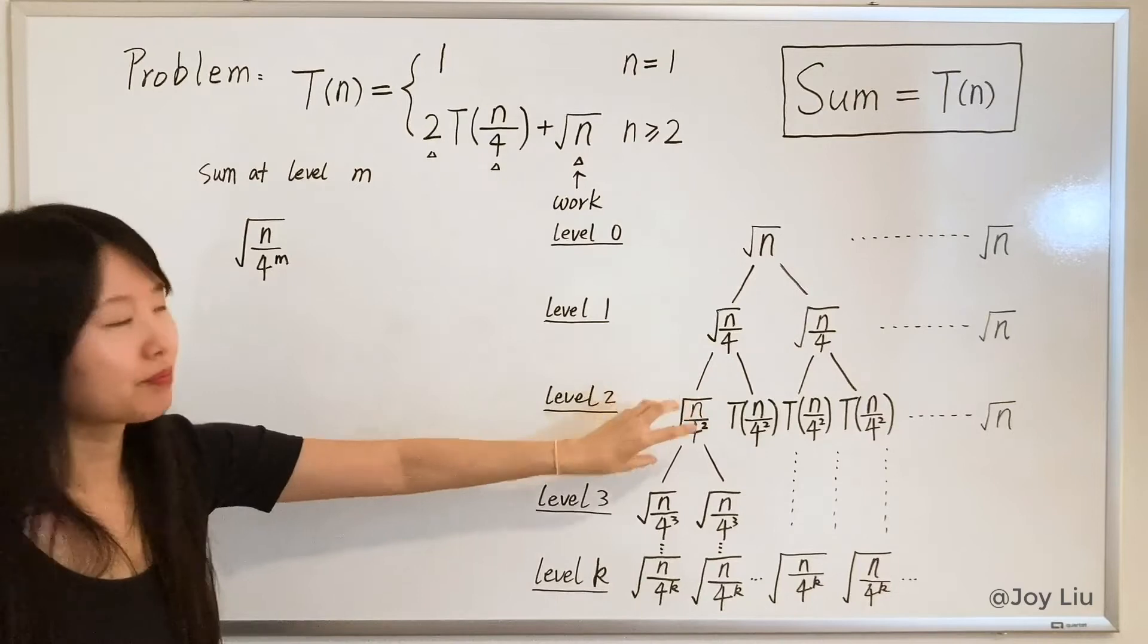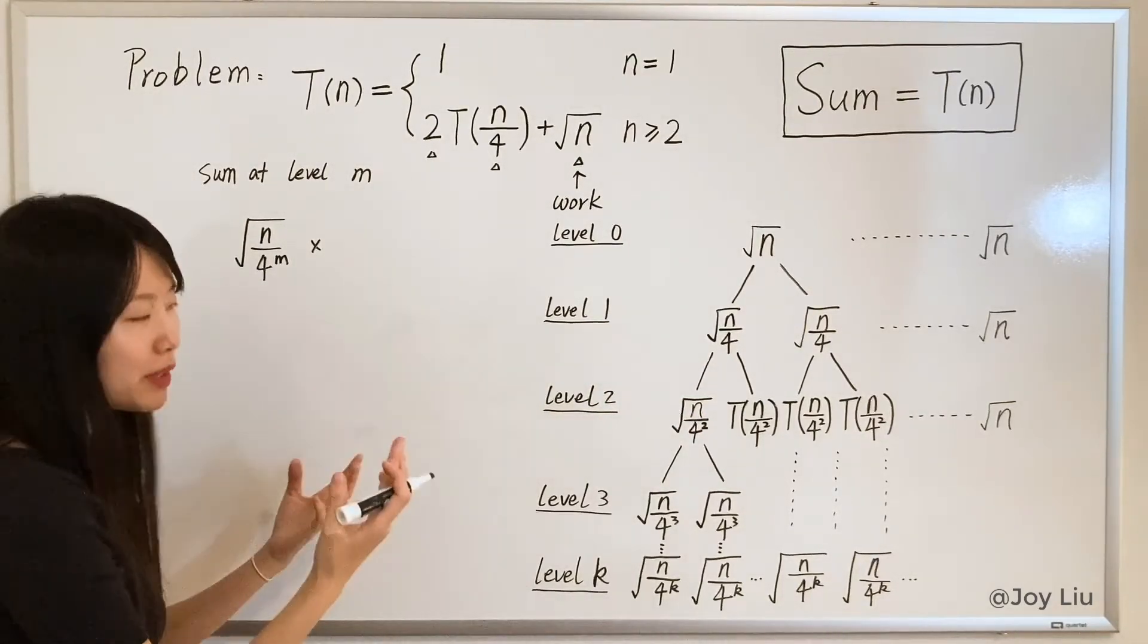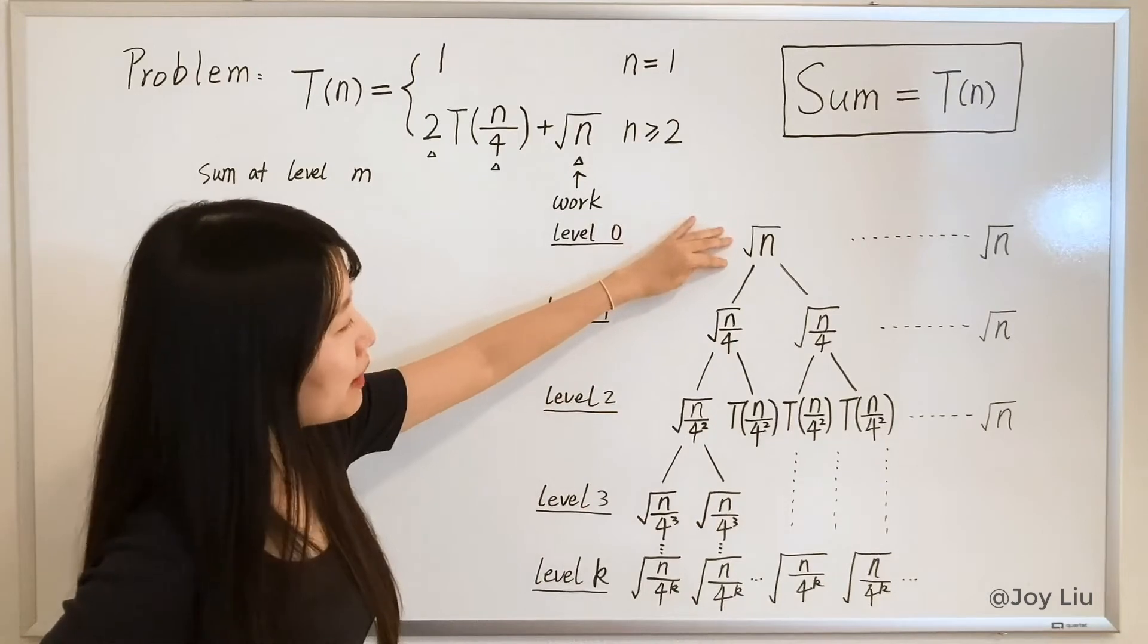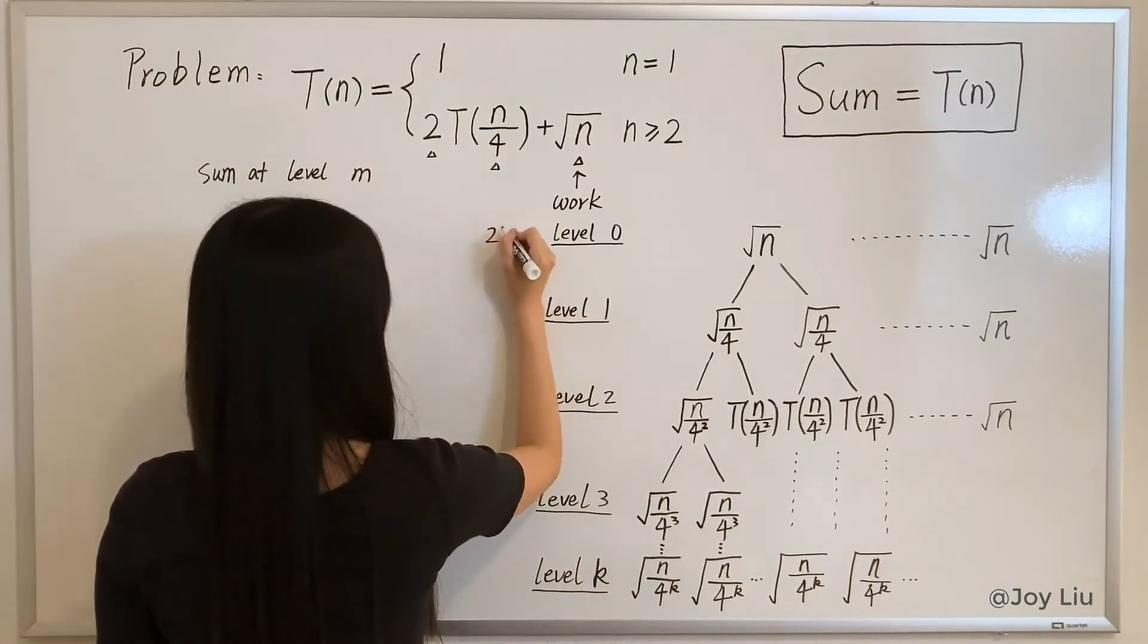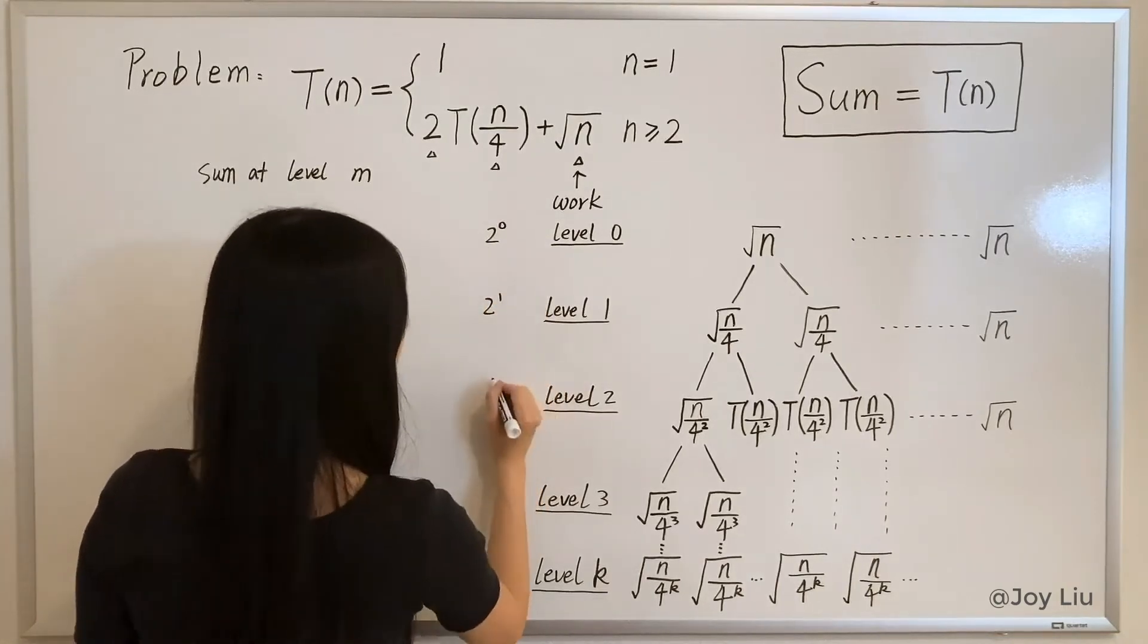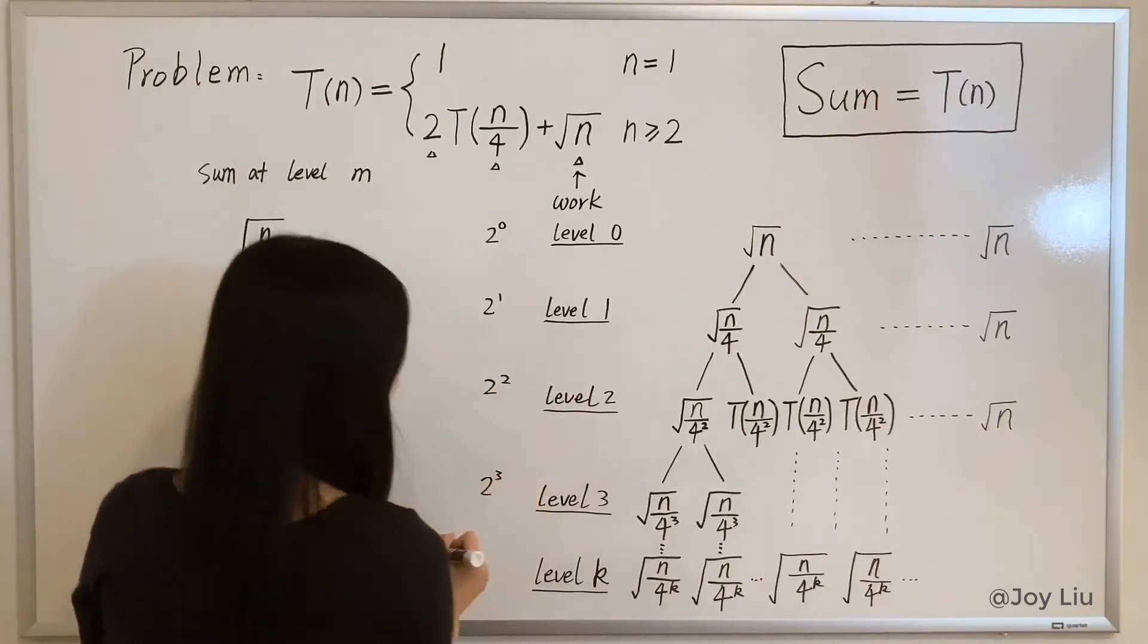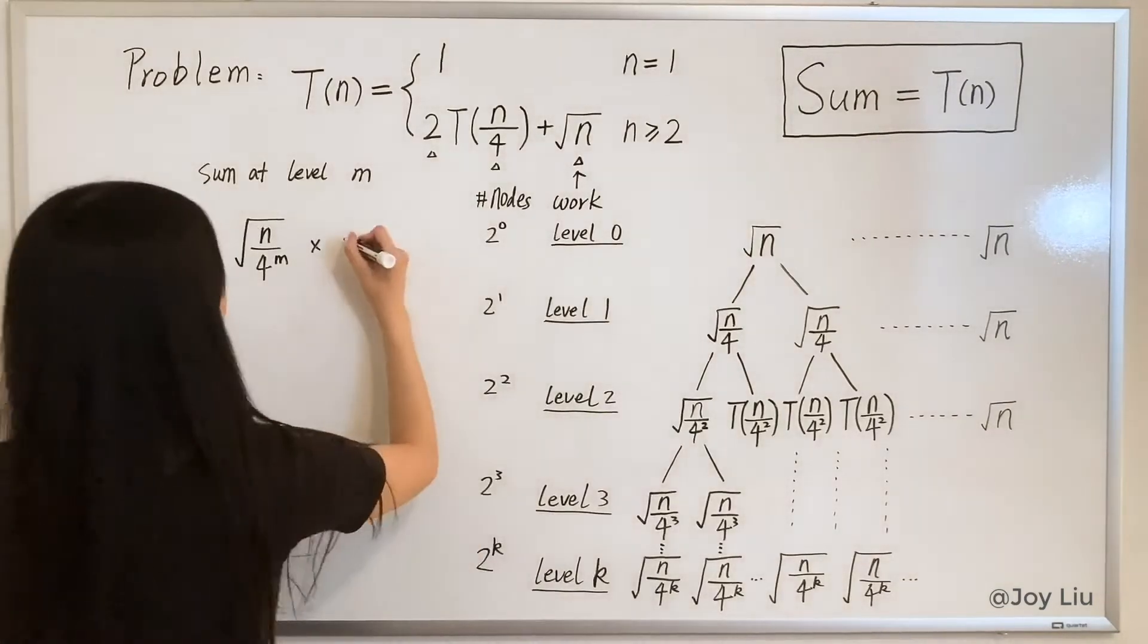And how many nodes would be on level m? Since we have two here, so it's a binary tree, that means every node has two children. So at level zero that would be 2 to 0, level two that would be 2 to 1, level three that would be 2 to 2, and level three will be 2 to 3, level K, 2 to K. So how about m? That would be 2 to m.